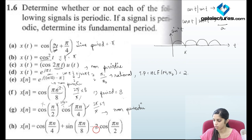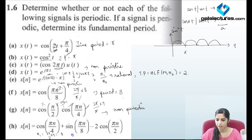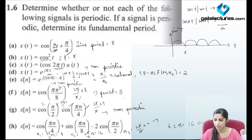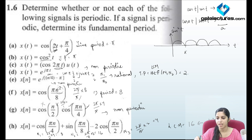Now look at the last part. We determine the period by checking individual periods first. Period for the first function is 2 pi divided by pi/4 equals 8. Period for the second is 2 pi divided by pi/8 equals 16. Period for the last one is 2 pi divided by pi/2 equals 4. Now find the LCM of 8, 16, and 4. The LCM is going to be 16. So the combined time period is 16. When you are adding two or three functions, the combined period is going to be the LCM of individual periods.